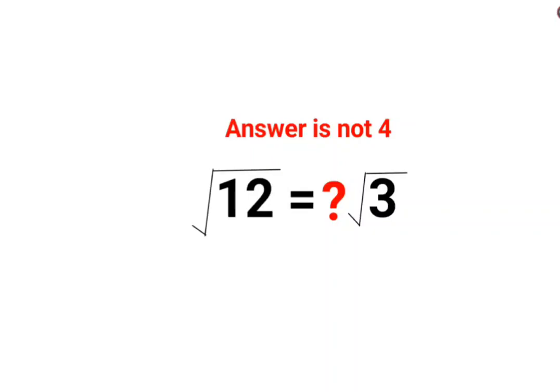Welcome everyone. Today we are going to understand how to simplify √12 in this way. Here we have a hint that √12 when simplified, we have a √3 in the picture.